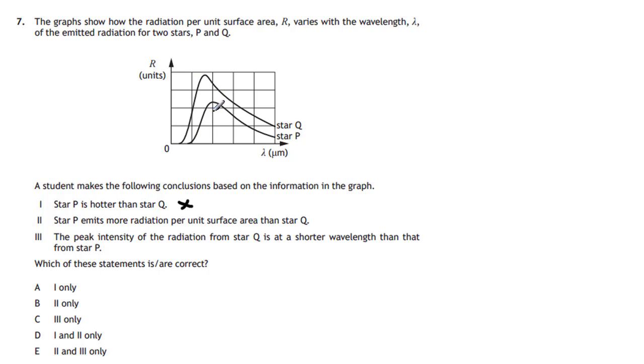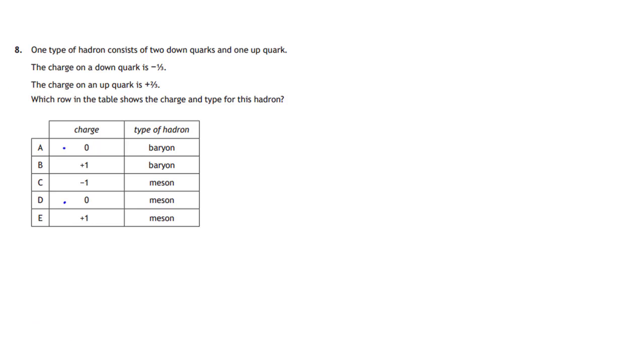Star P emits more radiation per unit surface area than star Q. No, because if you look at star P, it's got less area under the graph. So if you add up all this graph, it's going to be less than star Q. So it's not going to give off more radiation per unit surface area. So that one's wrong. Which leaves us with this final statement. Let's hope it's correct. The peak intensity of radiation from star Q is at a shorter wavelength than that of star P. Well, that's correct because there is the wavelength, the peak wavelength of star Q. And we drop down a little line from that. We can see that the wavelength is there. And there is the wavelength from star P. And you can see that, in this case, the peak intensity of radiation from star Q is at a shorter wavelength than star P. So that statement is correct. So our answer to this question is three only. It's got to be C. Good question. And study those graphs.